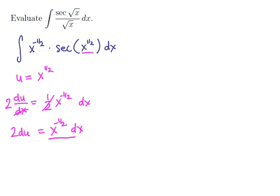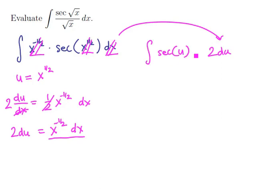This is the differential we need to fit. Notice that up in the original integral, it's bookended on either side, so we can cross off these two pieces and replace them with 2 du. The x to the one-half can be replaced with just a u, so we have the secant of u. And then we're integrating this.